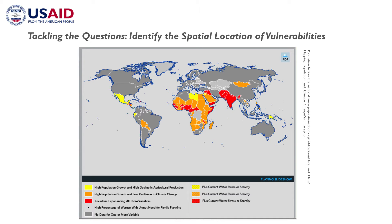So how do we tackle this very difficult question? I find it very helpful to first identify the spatial location of vulnerabilities. I'd like to use maps that one can often find on the internet, such as this one by Population Action International, that seeks to identify areas of high vulnerability. This particular map tries to show where countries experience the highly contentious, serious issues of high population growth, high decline in agricultural production, and problems of resilience to climate change.